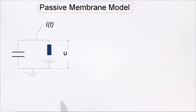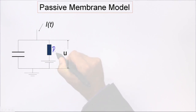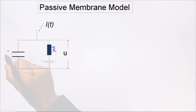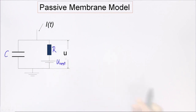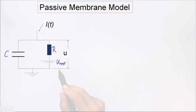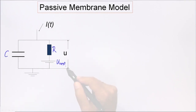Our RC circuit is characterized by a resistor R and a capacity C. To keep the treatment slightly more general, I also introduce here the sign of a battery with voltage U-rest. If there is no current injected into the circuit, the voltage measured across the circuit would be exactly U-rest. U-rest stands for resting voltage.